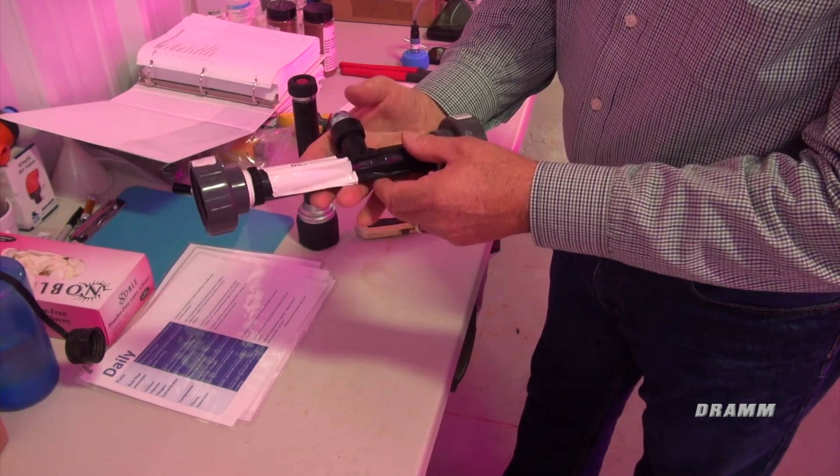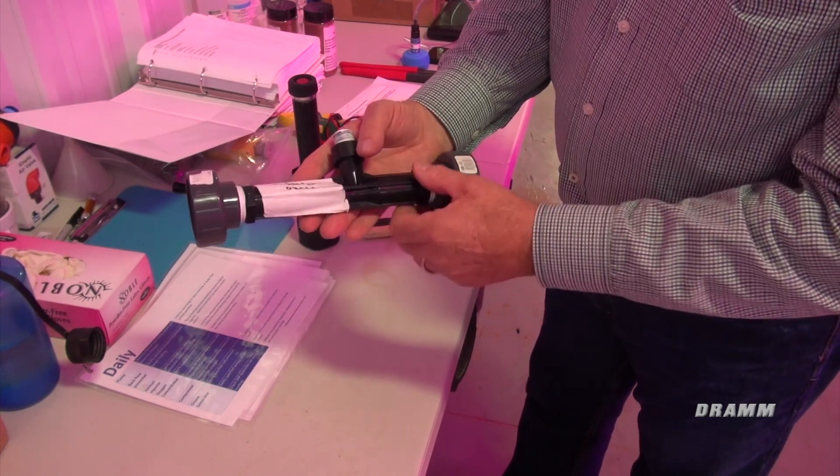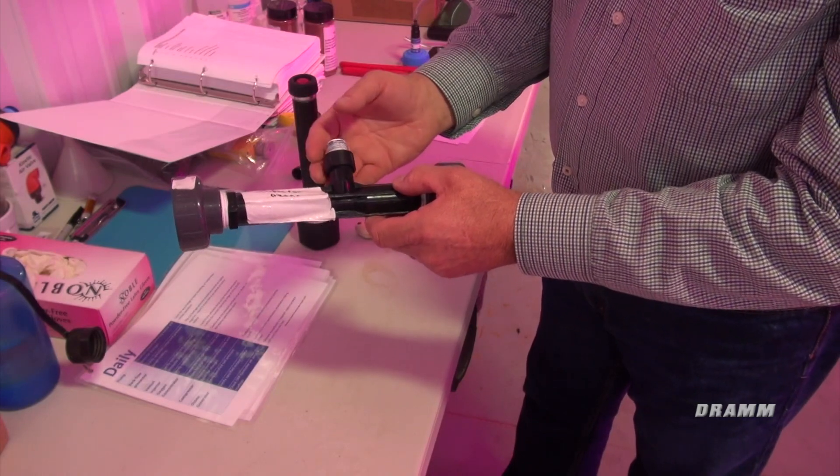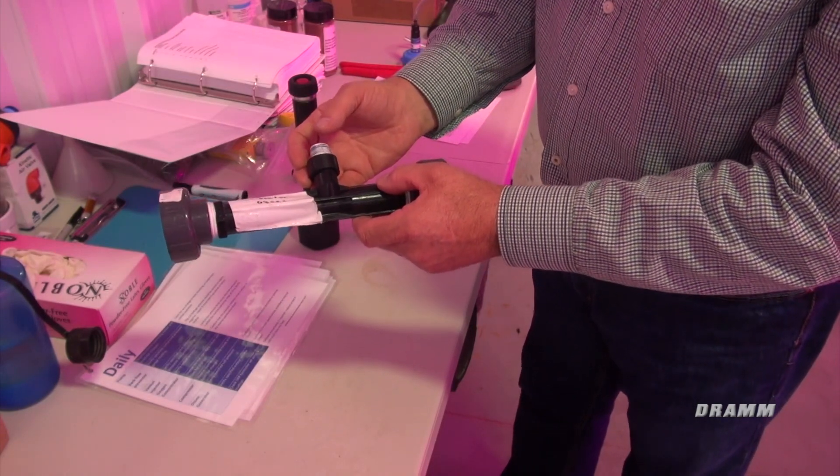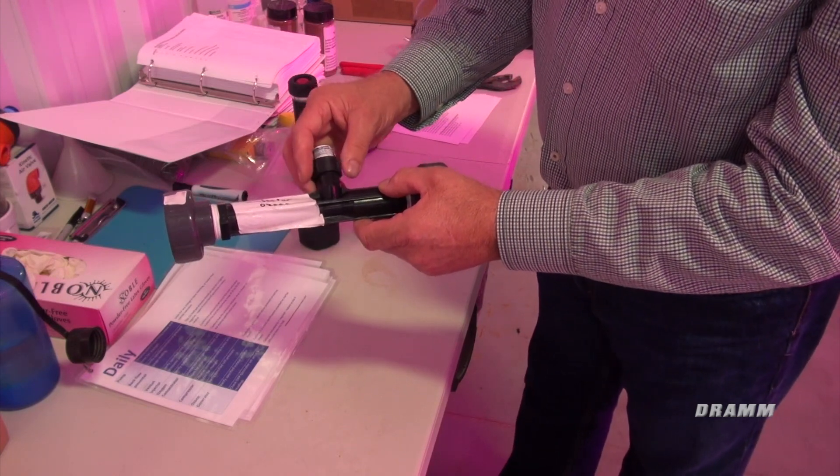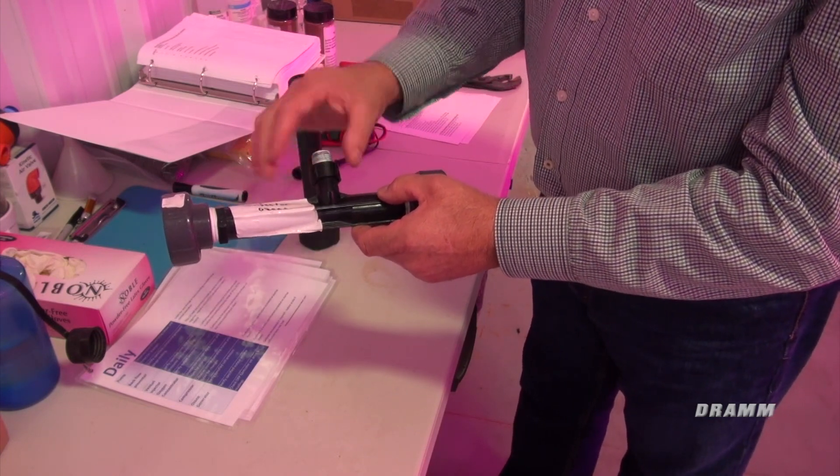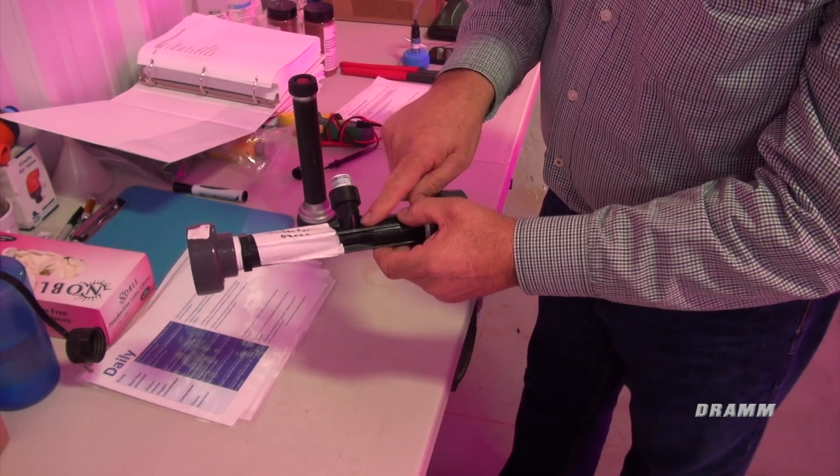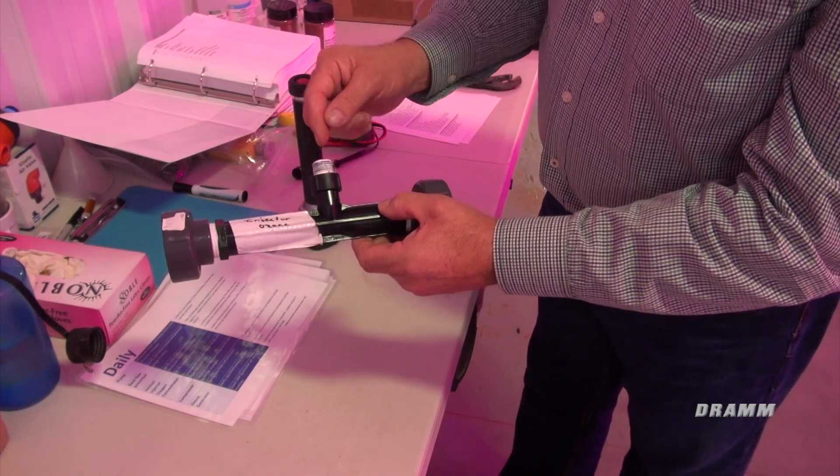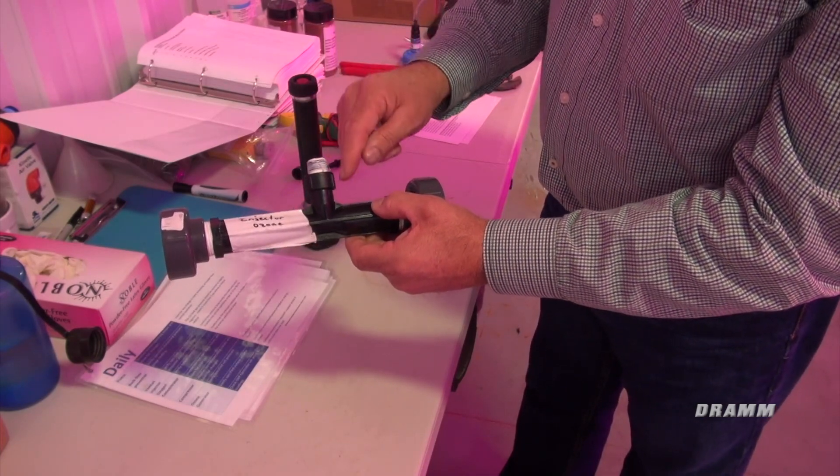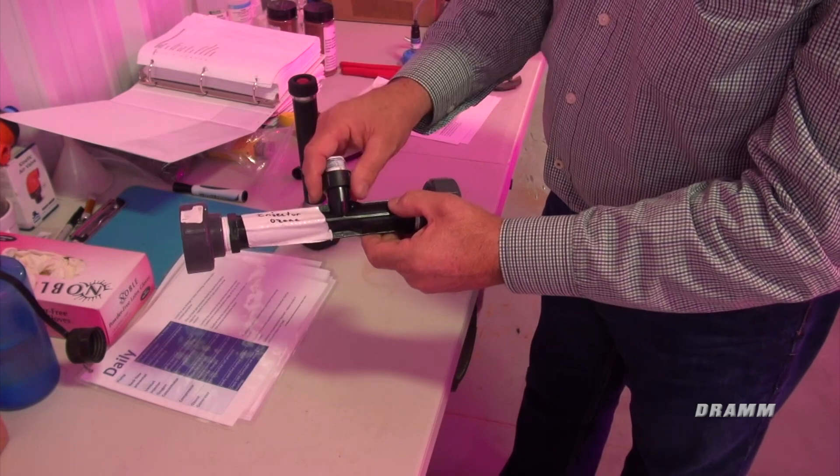This is the ozone injector. It's a venturi injector, and this is how we get the ozone into suspension, the ozone gas in suspension in the water. About 95% of getting the ozone into suspension occurs at this point right here. Water is flowing through here, creates a vacuum, and we draw the ozone gas through this tube, through a channel, and into the water.